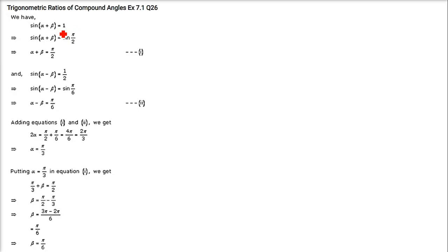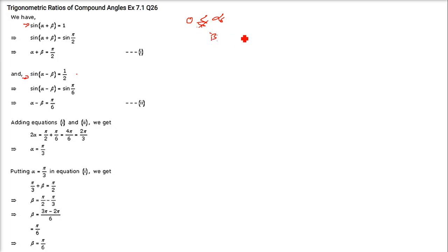Now, sin(α + β) = 1 and sin(α − β) = 1/2 are given. The angle α is in [0, π/2] and β ≤ π/2. We have to find the values of tan(α + 2β) and tan(2α + β).